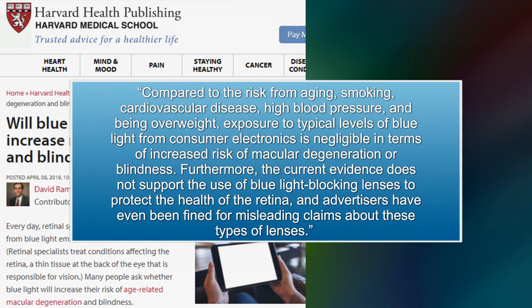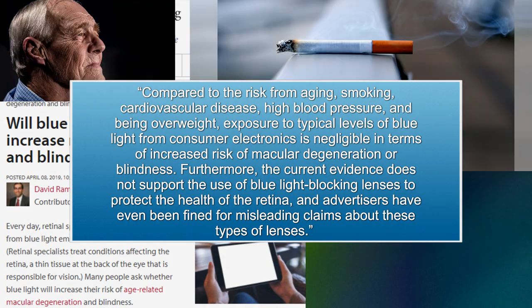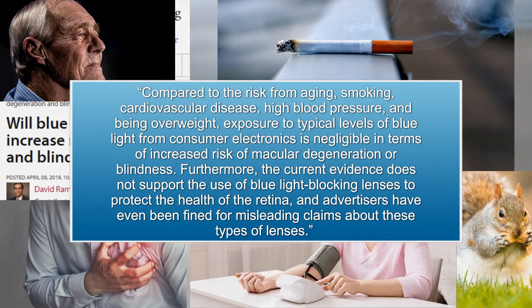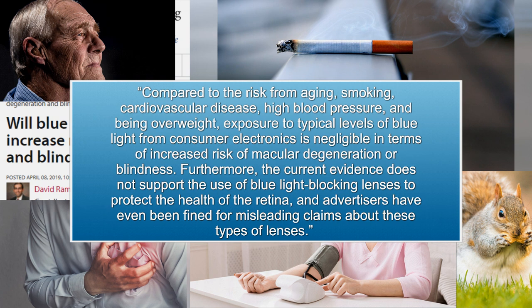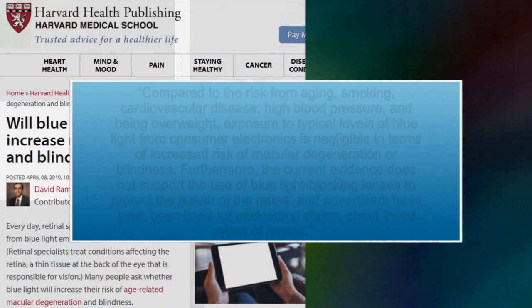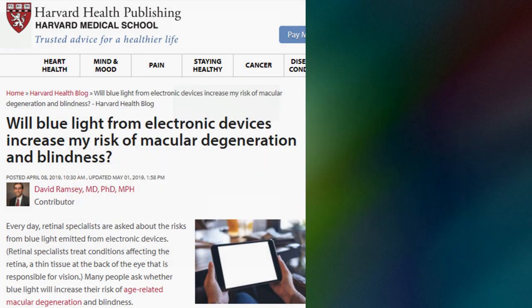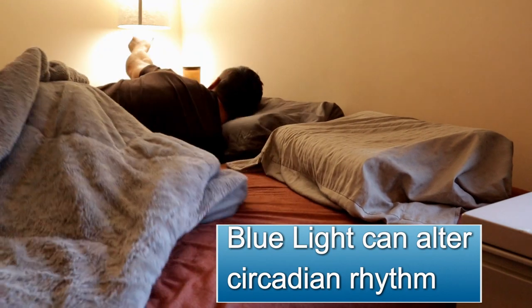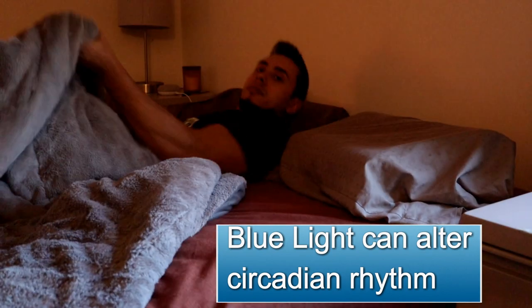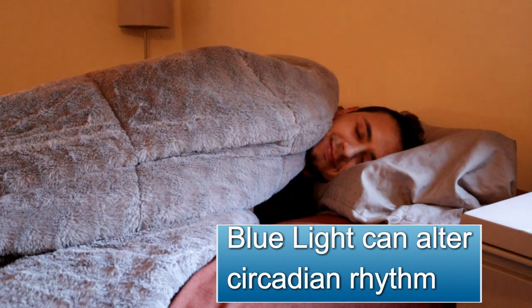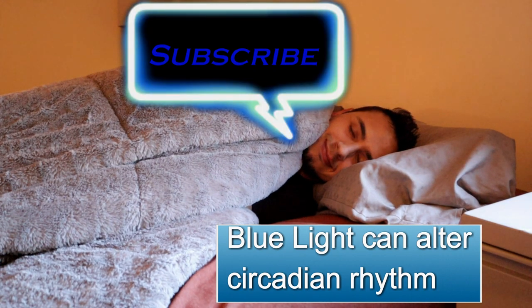And he stated the following: compared to the risk of aging, smoking, cardiovascular disease, high blood pressure, and being overweight, exposure to typical levels of blue light from consumer electronics is negligible in terms of increasing risk of macular degeneration or blindness. Furthermore, the current evidence does not support the use of blue light blocking lenses to protect the health of your retina, and advertisers have been fined for misleading claims about these lenses. Although I want to throw a caveat into this, he did mention, and also from some of the studies I did look at myself, they mentioned that blue light still does affect our circadian rhythm, which is essentially our sleep cycle. So just be aware of that before going to bed.